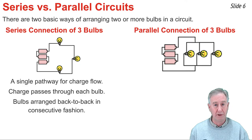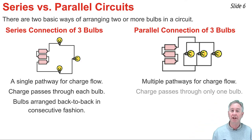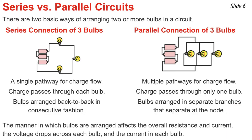There's also the parallel circuit. In a parallel circuit there is more than one pathway by which charge can make its way around the circuit, and any charge making a complete loop will only go through one of the light bulbs. This is because in a parallel circuit the bulbs are arranged so that at the node the charge diverts to separate branches, passes through the bulb, and then returns to the battery. The manner in which you connect your bulbs — series or parallel — will have huge effects upon the overall resistance and current, as well as the voltage drops and current in each individual bulb.